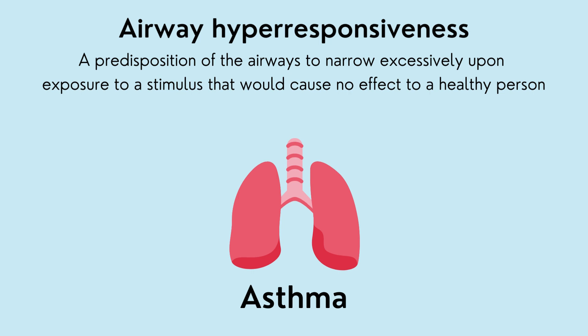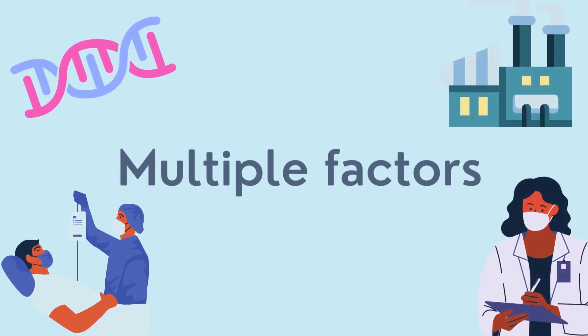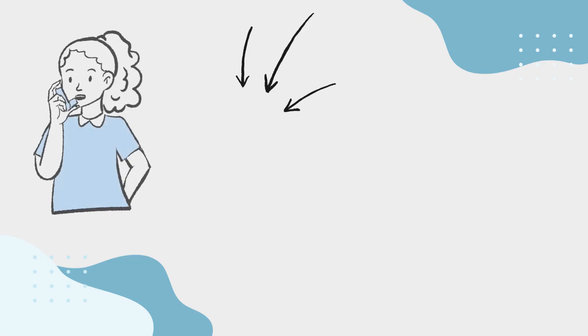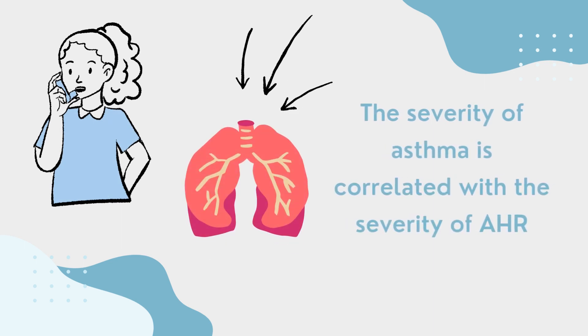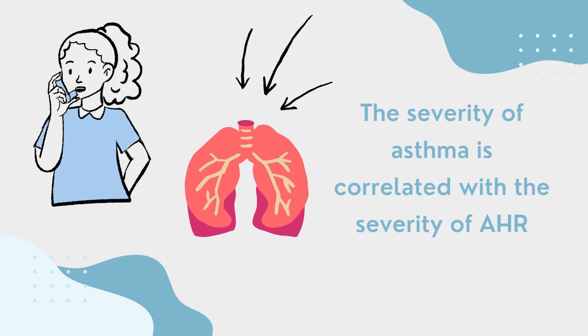AHR exists on a spectrum of severity between individuals and even within the same individual. There appears to be multiple factors which cause AHR in nearly all patients with asthma, with the severity of asthma being correlated to the severity of AHR. People with more severe asthma experience more severe AHR and vice versa.